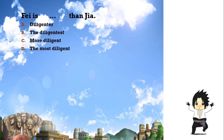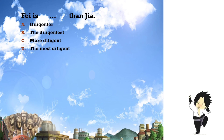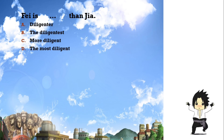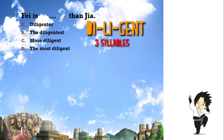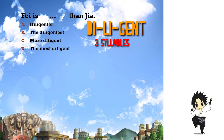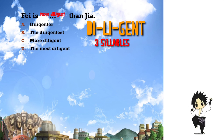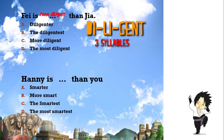Number nine: 'Fey is ___ than Jia.' The sentence is comparative because it is comparing two people. The basic adjective is 'diligent' — di-li-gent — which has three syllables, so we use 'more.' The answer is: 'Fey is more diligent than Jia.'